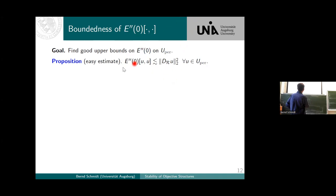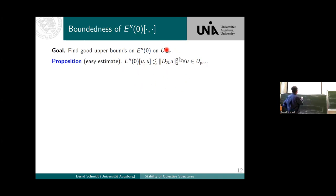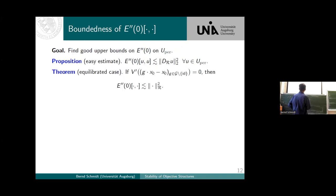This is a very easy estimate: this is the full finite gradient, and if you write down the energy and do the Taylor expansion, you almost immediately see that you have control by the full gradient. But that's too much on the right-hand side, so the next question is: can we find something which is bounded from above by a better constant? There's one case which seems almost too good to be true.